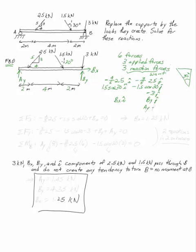Now, the sum of the forces in x just says add up the i's. So I have minus four fifths, 2.5 plus 1.5 sine 30 plus bx equals zero. Well, from there I can already solve bx is equal to 1.25 kilonewtons. So I'm a third of the way there. That's one of the things I wanted to know.